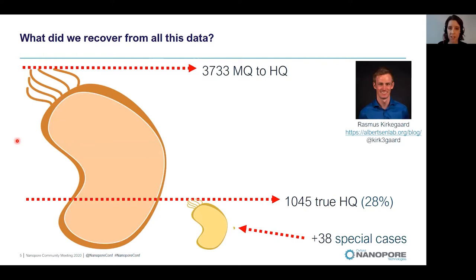Using a pipeline developed by Rasmus in our lab, we recovered 3,733 medium-quality to high-quality MAGs. But we were really interested in those with their full-length 16S genes, and we ended up with 1,045 true high-quality MAGs — about 28% of the total recovered. This wouldn't have been achievable with short-read sequencing alone.